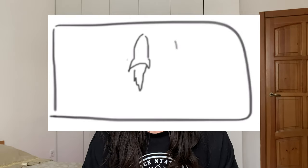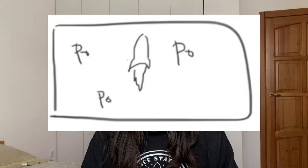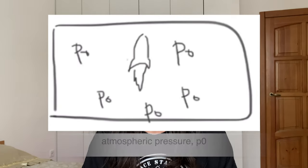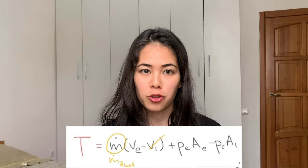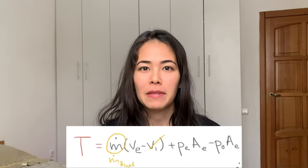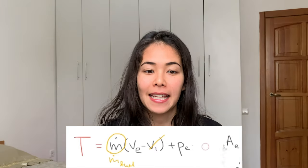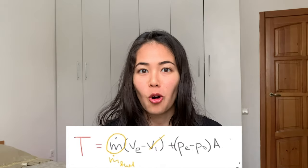So the term p2·A2 minus p1·A1 was a difference of forces due to pressures at exit and inlet. For the rocket engine, we compare exhaust pressure pe with the pressure of the atmosphere, since the rocket is traveling through the atmosphere where pressure is pretty constant and uniform. We call that p-naught or pa for ambient pressure. The difference of forces due to pressures for the rocket engine is therefore (pe minus p-naught) times Ae, the exhaust area, since there are no other areas associated with the rocket engine.